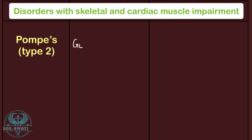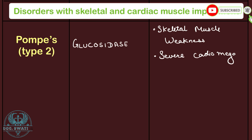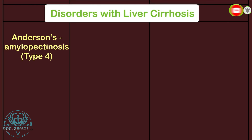Pompe's disease is Type 2 glycogen storage disease and is caused due to the deficiency of glucosidase. Clinical features include skeletal muscle weakness, severe cardiomegaly, and heart failure. Lastly, we have disorders associated with liver cirrhosis.